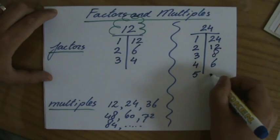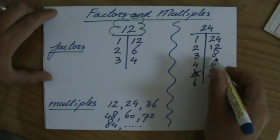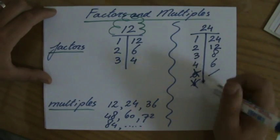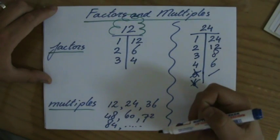5 times nothing, so 5 is not a factor, and then 6 times, but I already have 6, so I do not have to do it again. So 24 has 1, 2, 3, 4, 5, 6, 7, 8 factors.